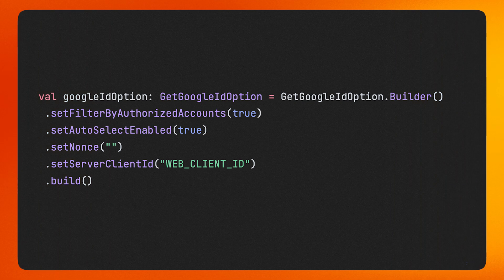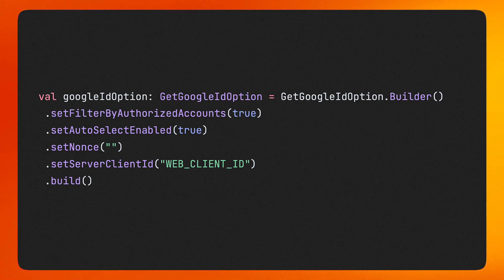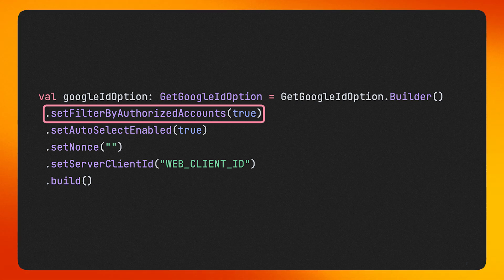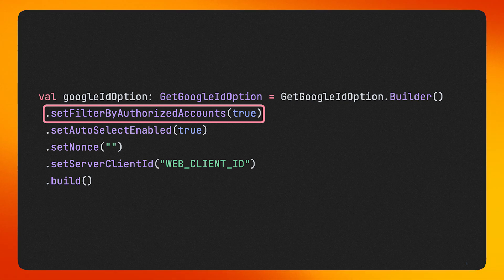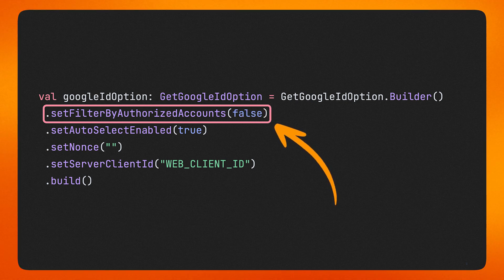Before we move on to cover what you can do with retrieved user credentials, let's take a step back and talk about the different configurations you can use in the Sign in with Google request. First, you can configure your request to only include Google accounts that have previously been used to sign in to your app. You can do this by setting Filter by Authorized Accounts to True in the first request. If no authorized Google accounts are available, you'll catch an exception of the type No Credential Exception. In that case, the user should be prompted to sign up with any of their available accounts. You can do this by calling the API again and setting Filter by Authorized Accounts to False. If you don't set any value in this field, it will default to True.